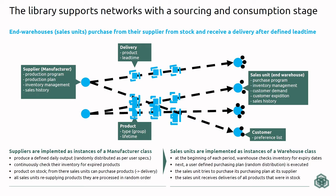The supplier produces into stock in a push-based inventory control logic and is then used as a supplier by a set of sales units, end warehouses, or consumption warehouses. These sales units face a consumer demand which is modeled as a defined distribution with a defined mean daily demand and a defined variability.